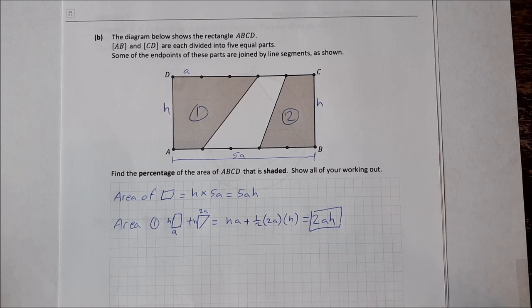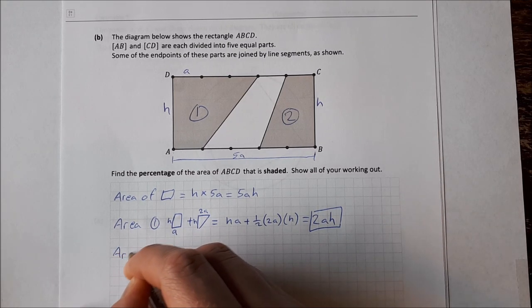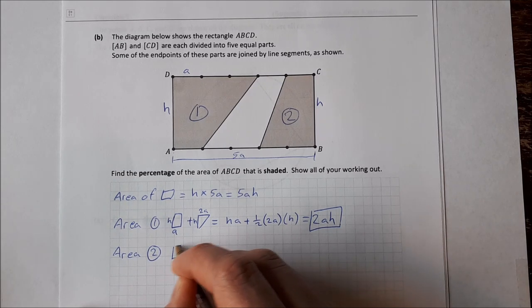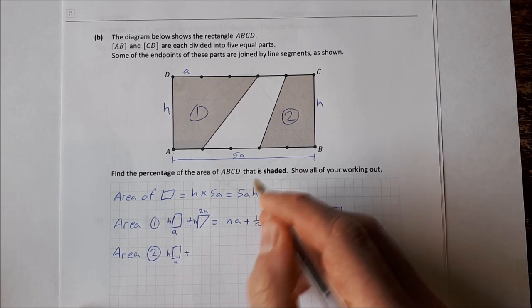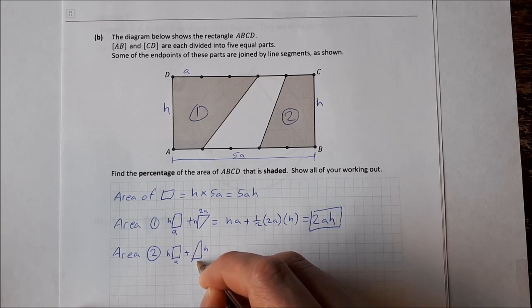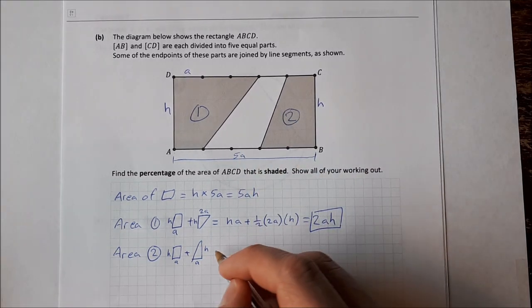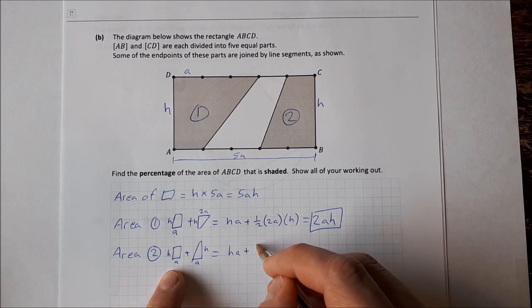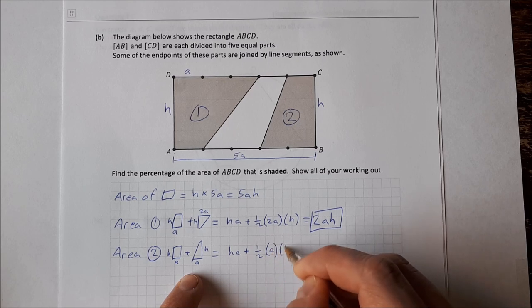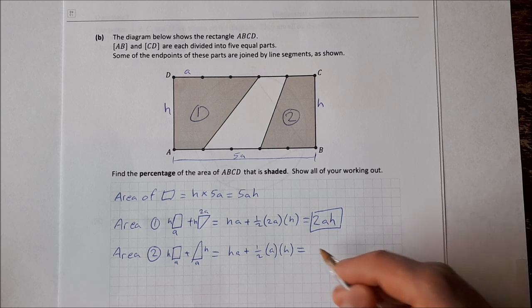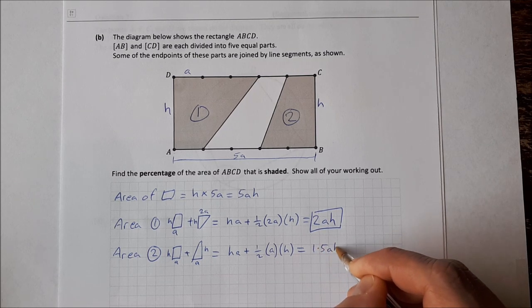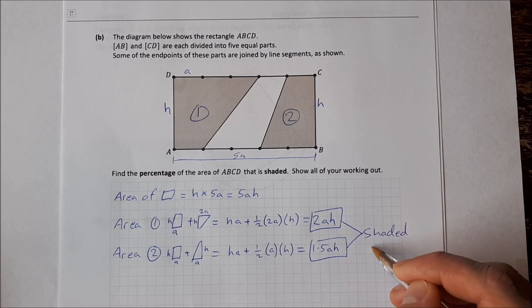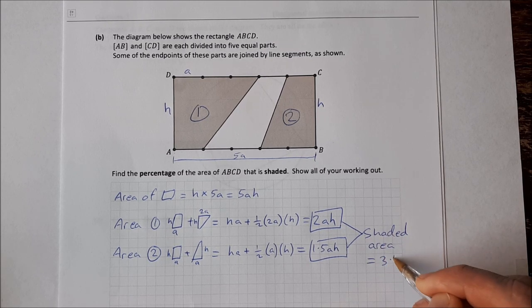So that's area 1. For area 2 we're going to do something very similar. Area 2 is a rectangle again and a triangle. So it's a rectangle which is H and A, and then it's a triangle which is H but only 1A now, it's not 2A like the last one. So that's 1A. That's going to be HA plus a half times A times H, and altogether that gives you 1.5AH. If we add the two of these together that gives you the shaded area of 3.5AH.